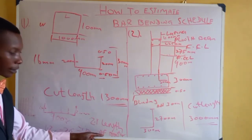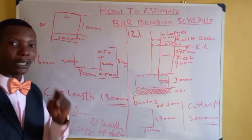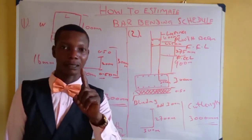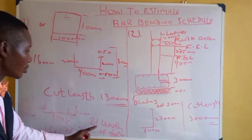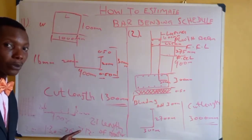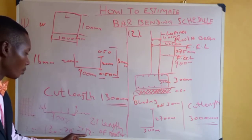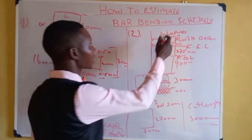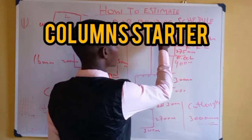The number of lengths of rod you are going to use: one length of rod is 12 meters. So 26.4 divided by 12 gives you 2.1 lengths of rod. Next, we move to the column starter.